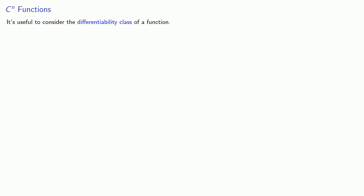It's useful to consider the differentiability class of a function. A function is C^n if its nth derivative is continuous. We'll regard the zeroth derivative as the function itself, so a C^0 function is a continuous function.